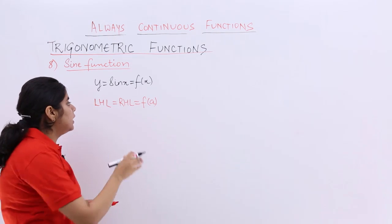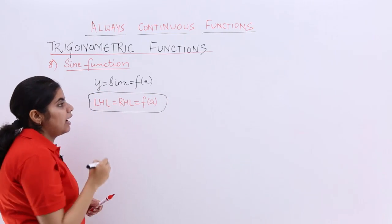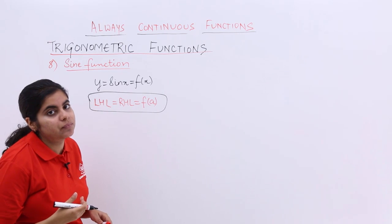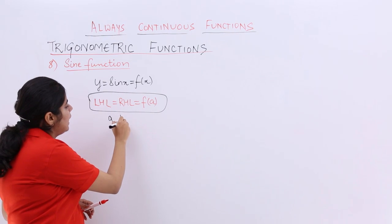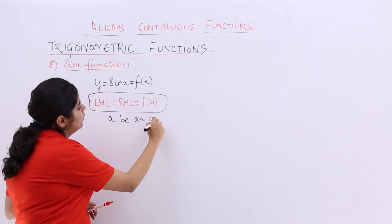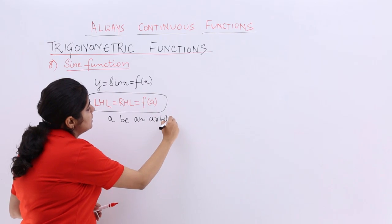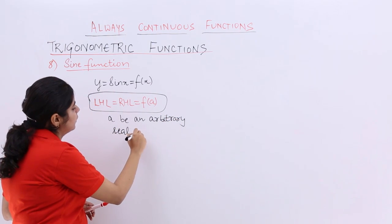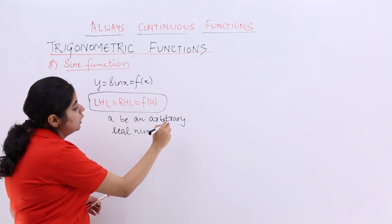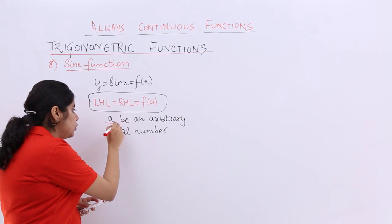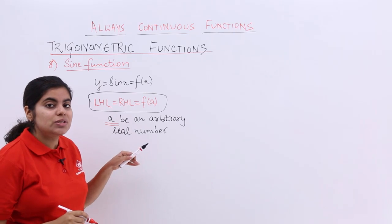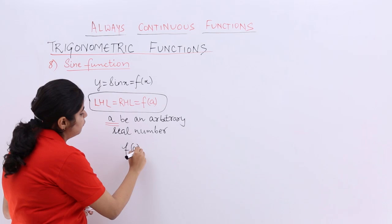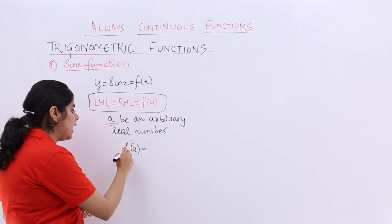So basically if I need to prove this for continuity, I might say that first let me check what is f of a, wherein I take a as any arbitrary real number. So I say a be an arbitrary real number. Now when I have knowledge of what is a, I know the formulas related to sine function, let me prove its continuity. So I have f of a. What is f of a?